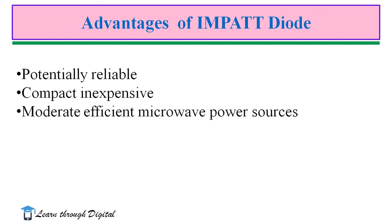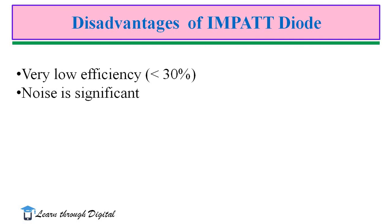The IMPATT diode is potentially reliable, compact, inexpensive, and a moderately efficient microwave power source. These are some advantages of the IMPATT diode. Disadvantages include very low efficiency, generally less than 30%. It is also very noisy because avalanche is a noisy process; the noise figure for the IMPATT diode is around 30 dB, not as good as a Klystron, GaN diode, or TWT amplifier. Additionally, tuning rate is not as good as GaN diodes and amplifiers.